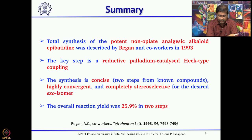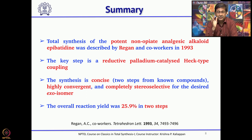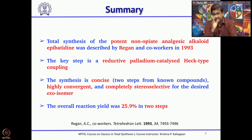This synthesis was reported in 1993 and features two key reactions: an intermolecular Diels-Alder reaction and a palladium-catalyzed reductive Heck coupling reaction. The whole synthesis is convergent — two different starting materials were prepared and then coupled — and highly stereoselective, forming only the exo isomer during Heck coupling. Overall, the yield is 25.9 percent over the final steps, which should be considered an excellent total synthesis.